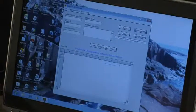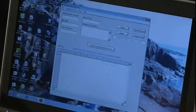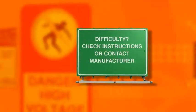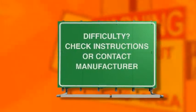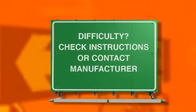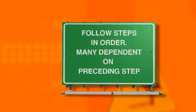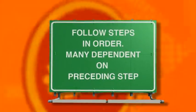Before downloading the data from the device, your computer must have the Gamma 922 interface software installed. If you have difficulty downloading, refer to the software instructions and, if necessary, seek help from the manufacturer before proceeding. Follow these downloading steps in order, because many steps are dependent on the preceding step.